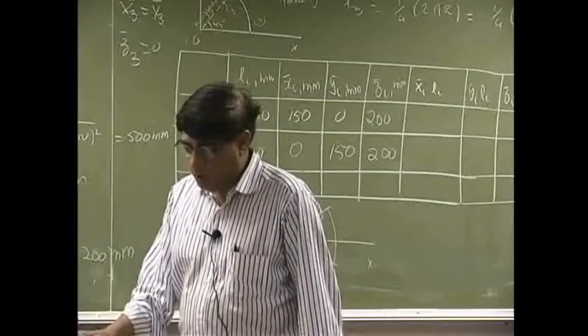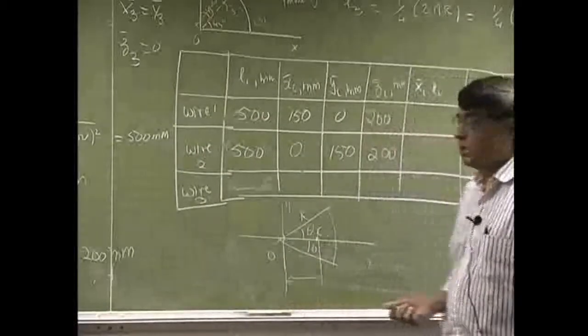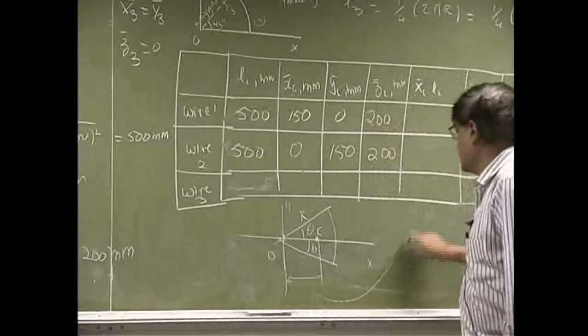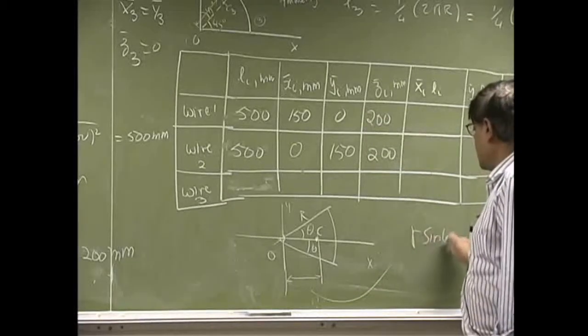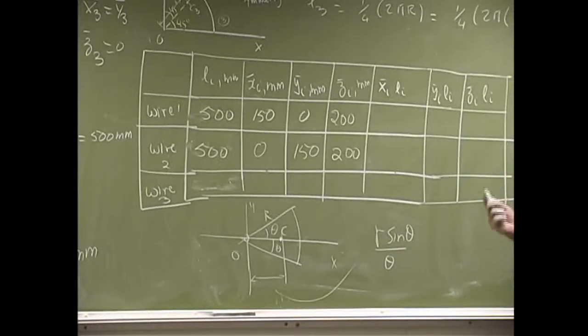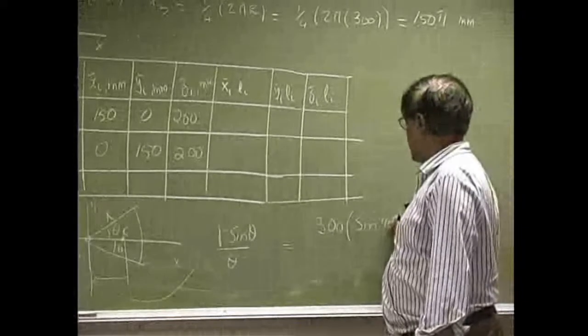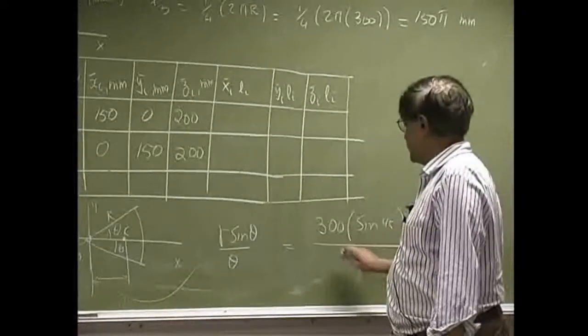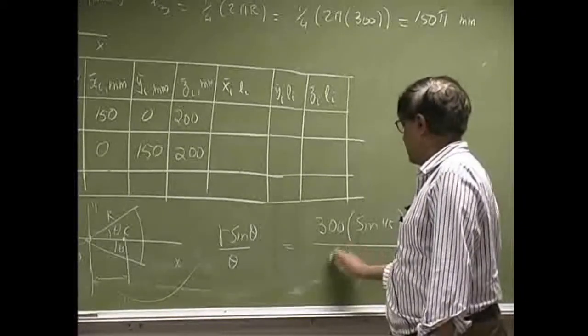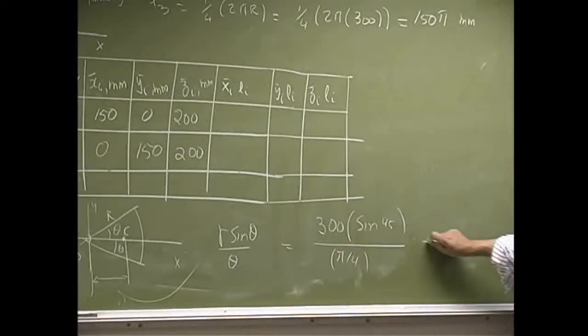That's in the top left corner and this distance is r sine theta over theta. So for the problem you're working with, R was 300 and theta was 45, so you divide this by pi over 4.